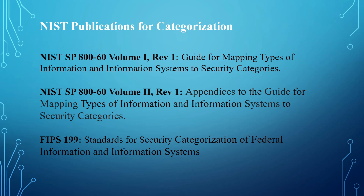The second is NIST SP 800-60 Volume 2 Rev 2, which is the appendix to the guide for mapping types of information and information systems to security categories. And the third is FIPS 199, which is the standard for the security categorization of federal information and information systems.